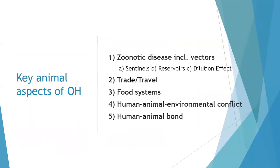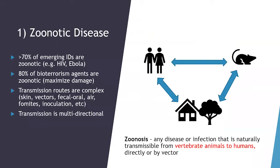These are the key animal aspects of One Health we're going to cover today, though this list is not conclusive. We're going to be talking about zoonotic diseases including those spread by insect vectors, the effects of trade and travel, food systems, human-animal-environmental conflict, and the human-animal bond.